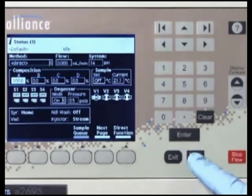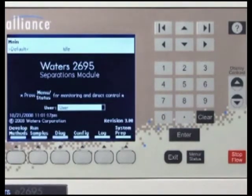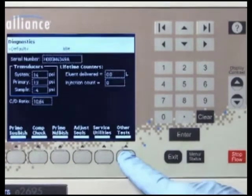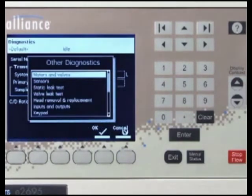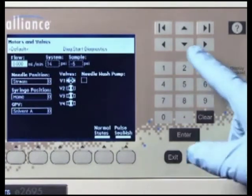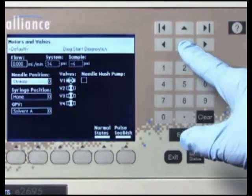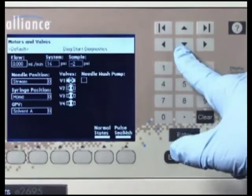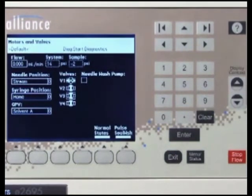Press the menu status key to return to the main menu, then press the diagnostic screen key. Press the other test screen key and select motors and valves from the list of available tests. Press the arrow keys to select V3. Verify that the V3 valve is open. If it is not, press any numeric key to switch the valve to the open position.